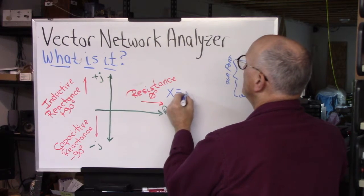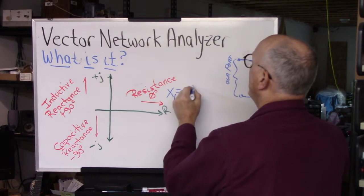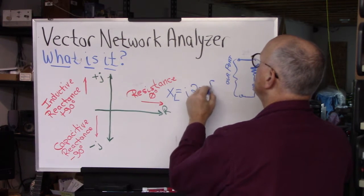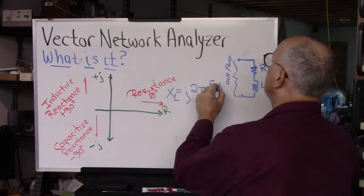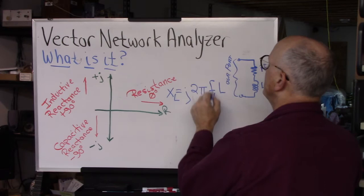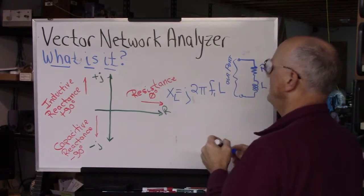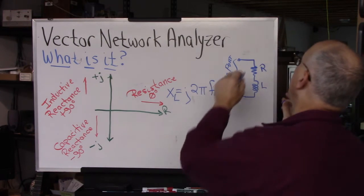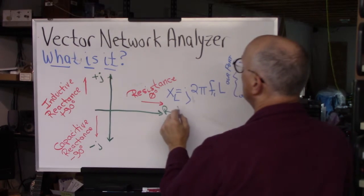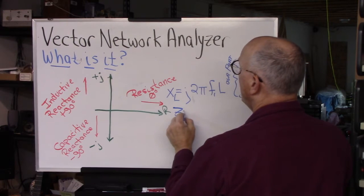Now the inductive reactance, X sub L, is going to be equal to j times 2 times pi times the frequency in question times the inductance in Henry's. This is frequency in Hertz. This is inductance in Henry's. And so we have this in series with each other here.